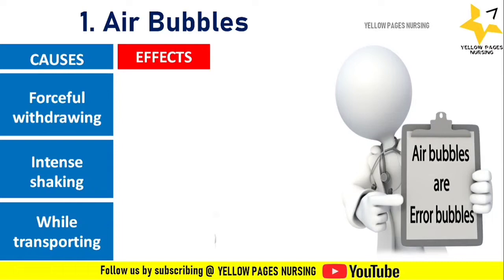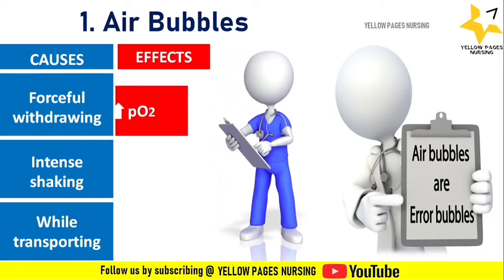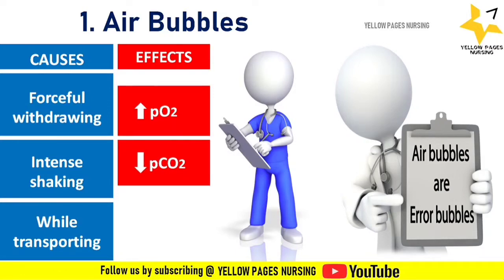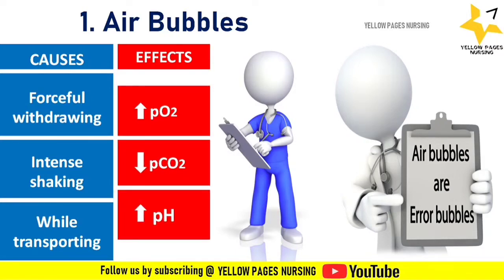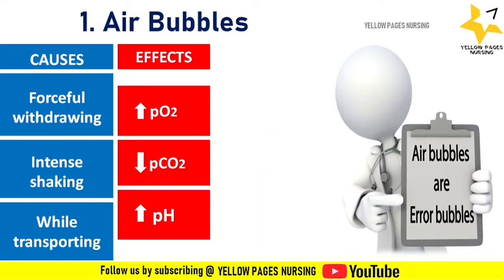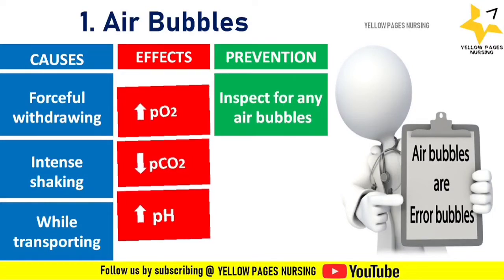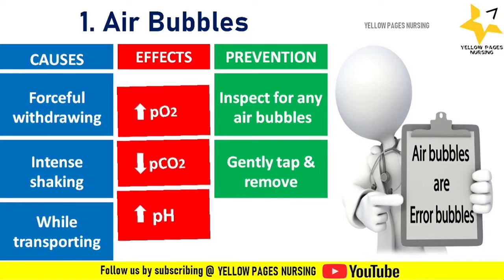The effects of air bubbles in the sample include variation in readings such as increase in partial pressure of oxygen, decrease in partial pressure of carbon dioxide, and increase in pH. To prevent this, once we collect the sample, inspect the syringe for any air bubbles and if found, gently tap and remove them.